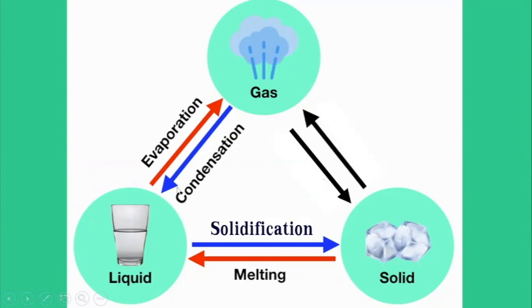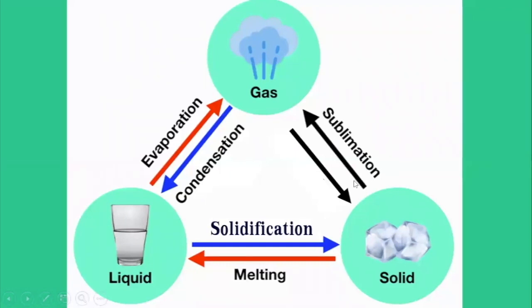Next one: when some solids are heated until a certain level, they may change their state from solid to gas directly without being a liquid. From solid, we can get gas directly. This is called sublimation. Repeat after me: sublimation. Some examples of solids that can sublime are camphor, dry ice, and so on.